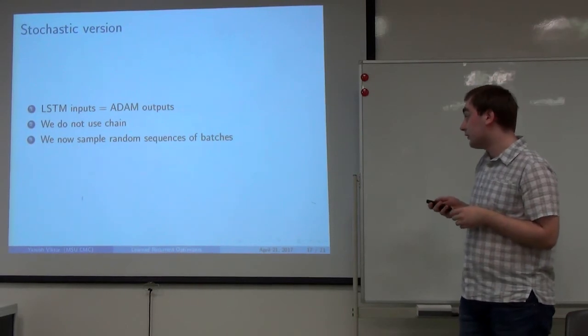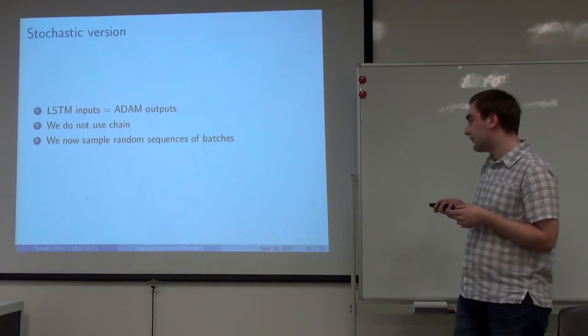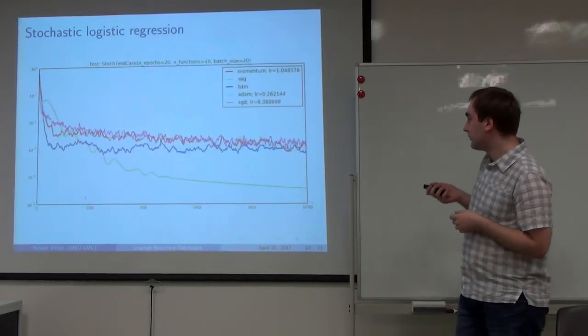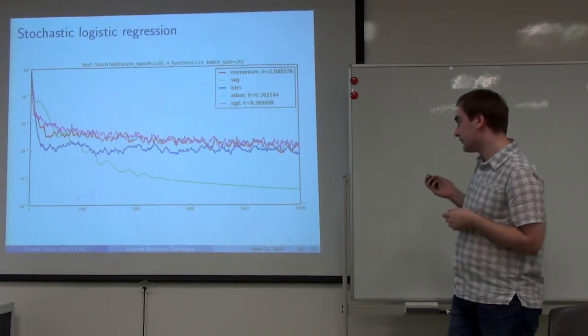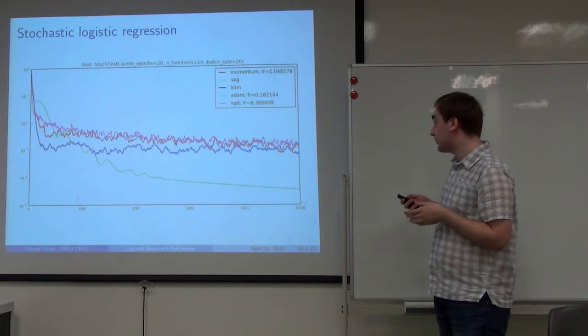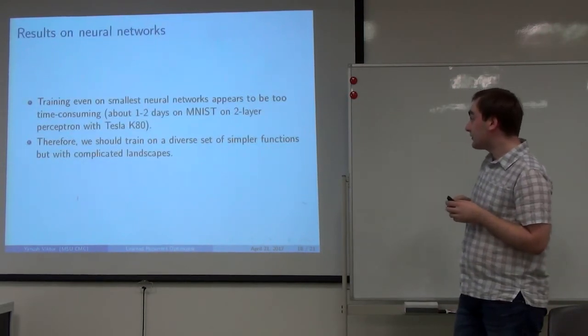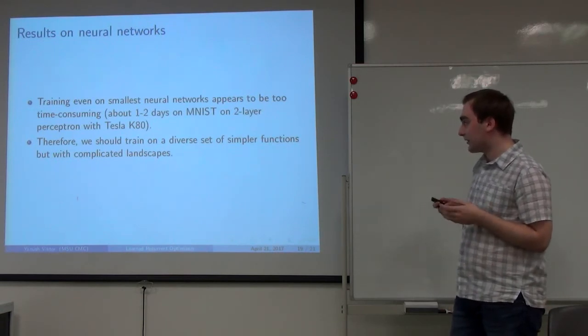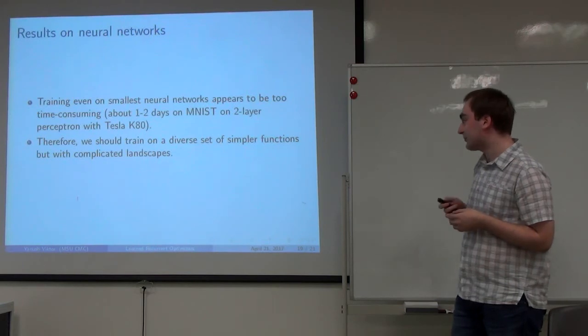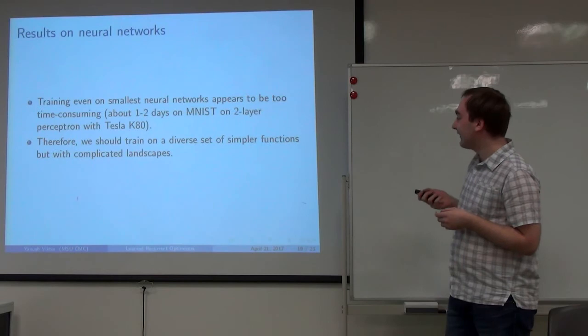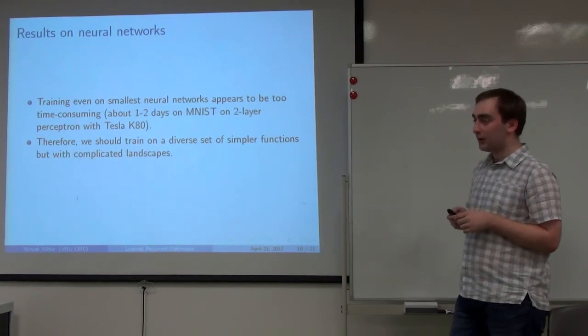In stochastic version I used as LSTM inputs Adam outputs. I didn't use chain. Now we sample random sequences of batches. Here are the results on stochastic logistic regression. Blue is LSTM. It doesn't diverge and performs a bit better than other optimizers except Adam. Results on neural networks aren't here because it takes too long to train this optimizer on even smallest neural networks - one or two days at least with Tesla K80. Therefore, we should train on some smaller problems but with diverse landscapes and then generalize to neural networks. That's what I will do in future work. The main idea is that we should introduce some architecture that is specific to the task of learning optimization.